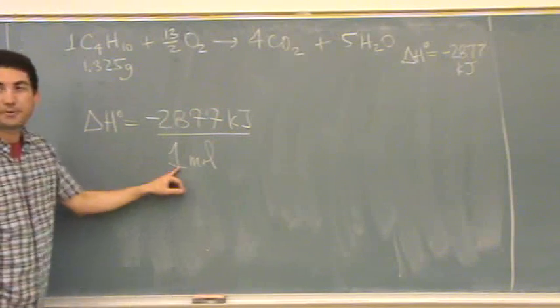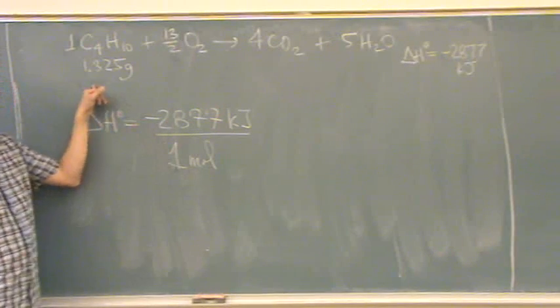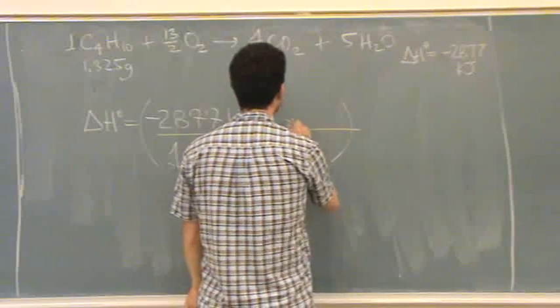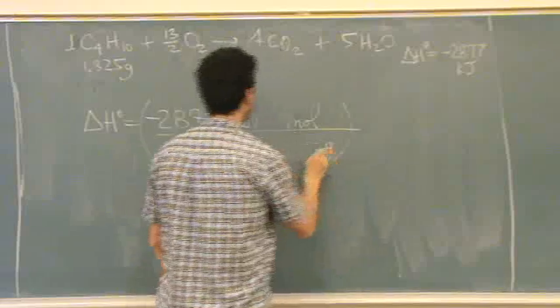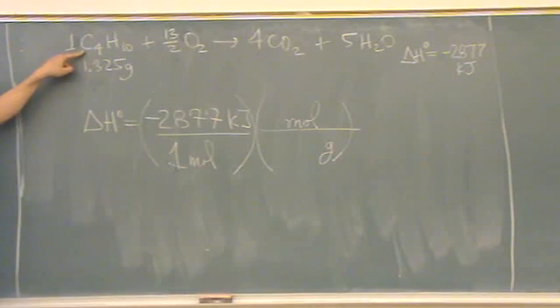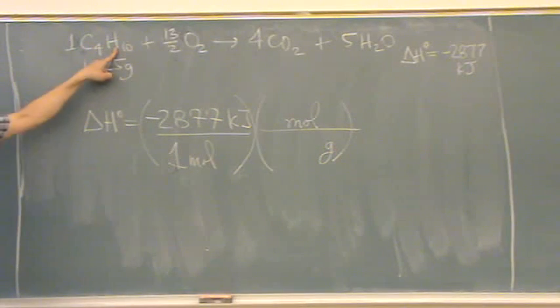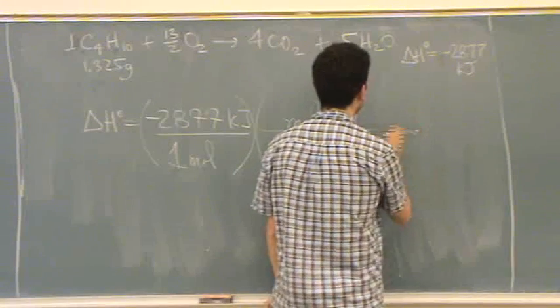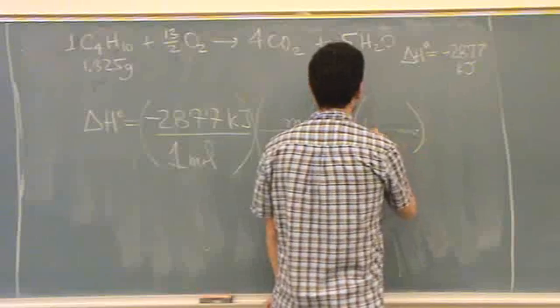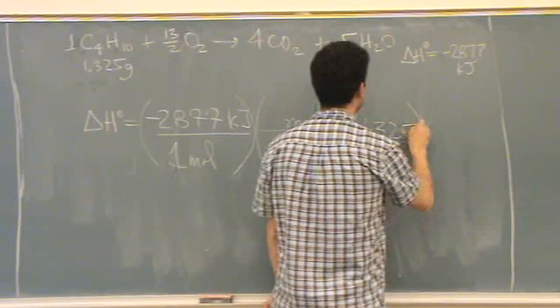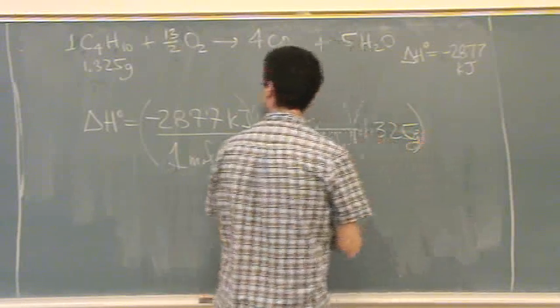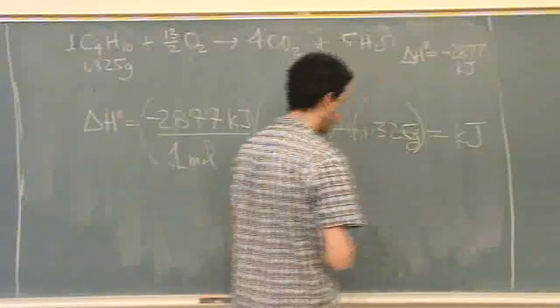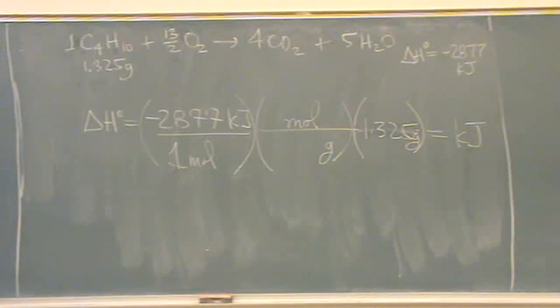Then, you don't want it per one mole, you want it this many grams. So we're going to do a little conversion. You need to find the molar mass of this compound here. So 4 times 12 plus 10 times 1.08 from your periodic table. And then, molar mass, 1.325 grams. And this will give you units of just kilojoules. Whatever that number is.